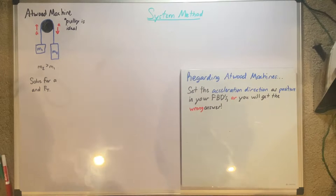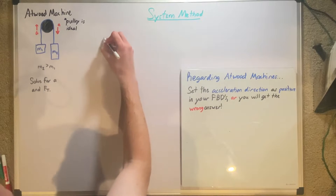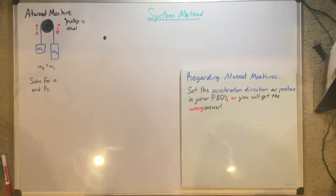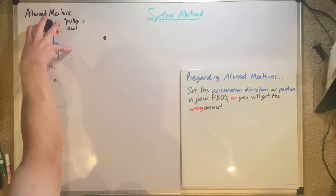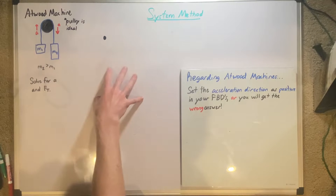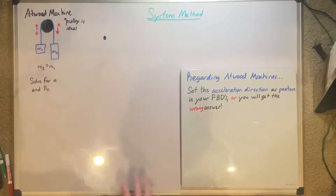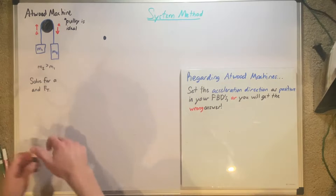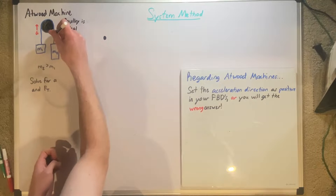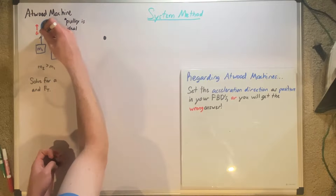Now we need to create our free body diagram for the system method. One thing is defining what our system is. If we define our system as this entire thing, it means that all the forces in it will cancel, because the system is everything. So if we have a force going downward on each of these — because it's gravity — and then we have a tension force that counteracts it going upwards, those internal forces cancel.